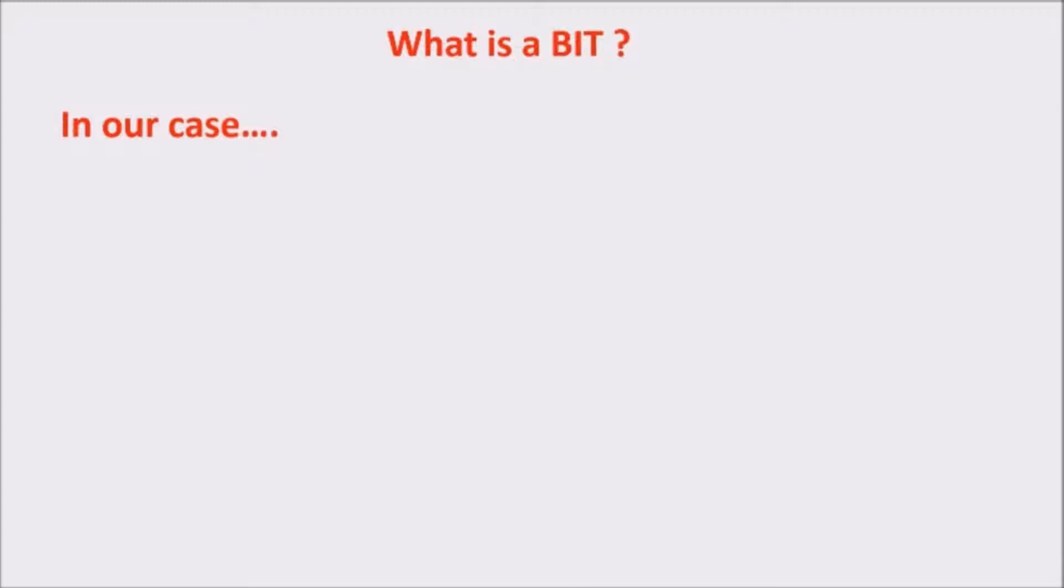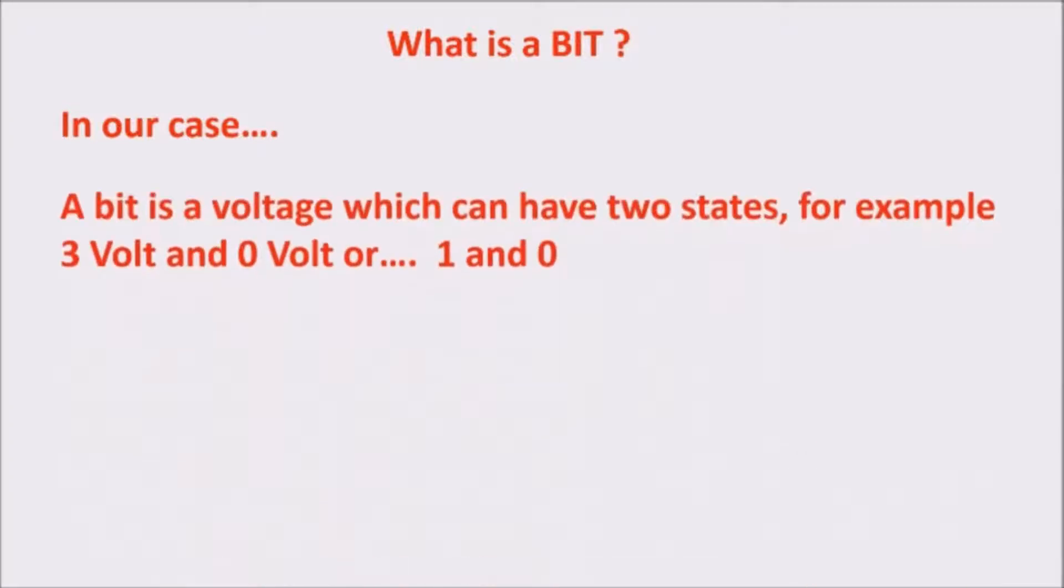In our case, for a computer, a bit is a voltage which can have two states. For example, 3V and 0V, or 1 and 0 if you prefer. And in order to pass from a state to the other, we use an electronic switch called a transistor.